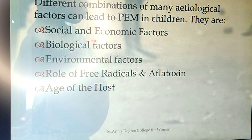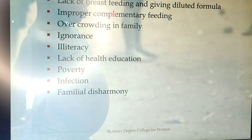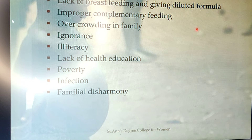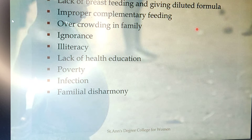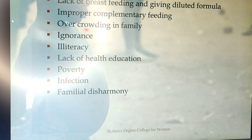The etiological factors include social and economic factors, biological factors, environmental factors, and age of the host. These include lack of breastfeeding, giving diluted formula to children, improper complementary feeding, overcrowding in the family, joint family situations where good nutrition cannot be provided, ignorance, illiteracy, lack of awareness and education about breastfeeding techniques, poverty, infections, and family disharmony.